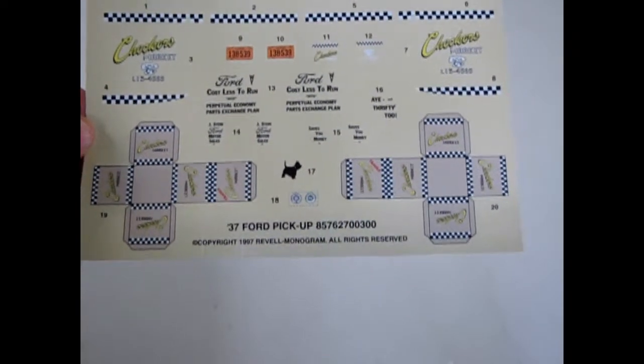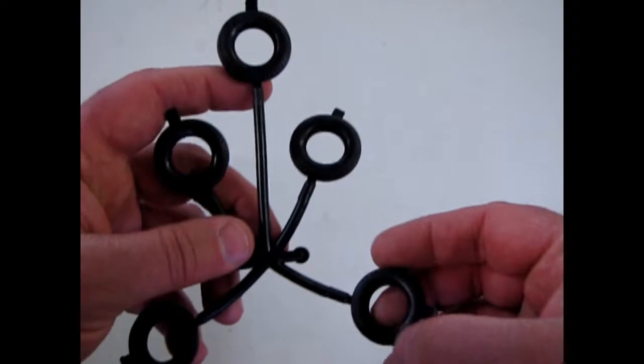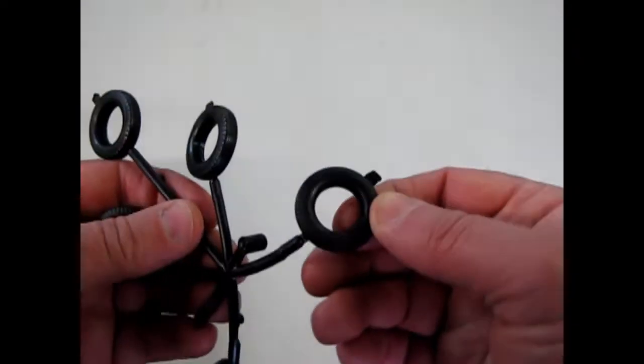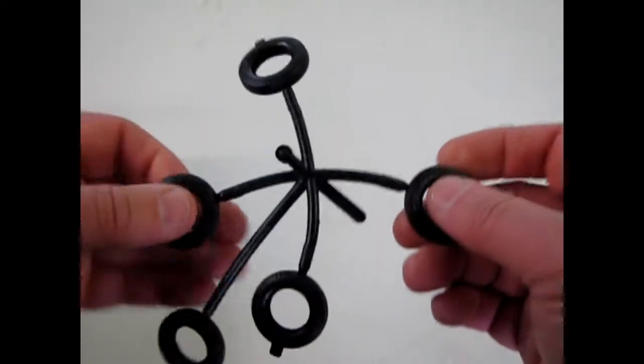Then we'll look at the tires. These were brand new, brand new mold for the tires. You get five.